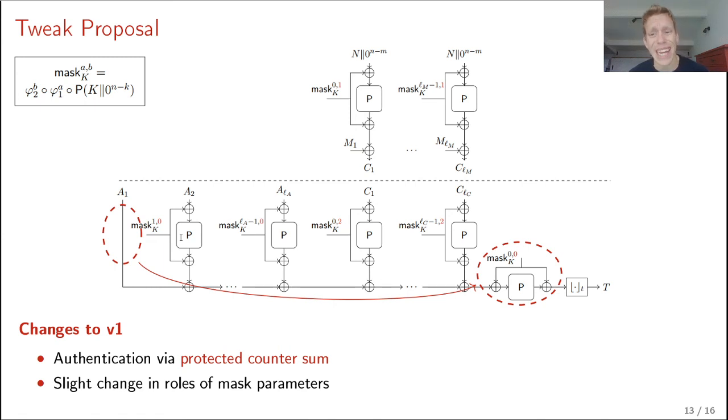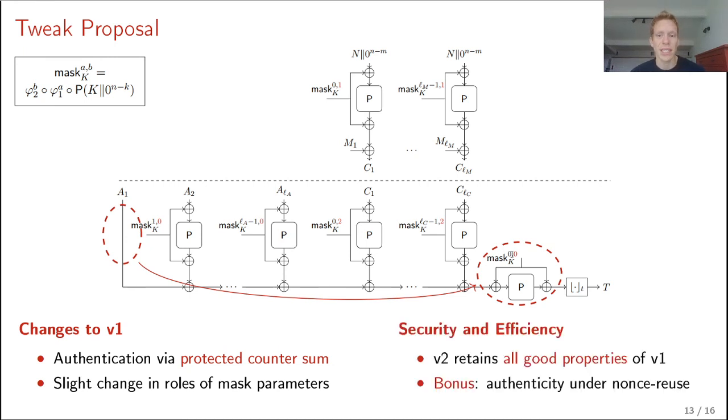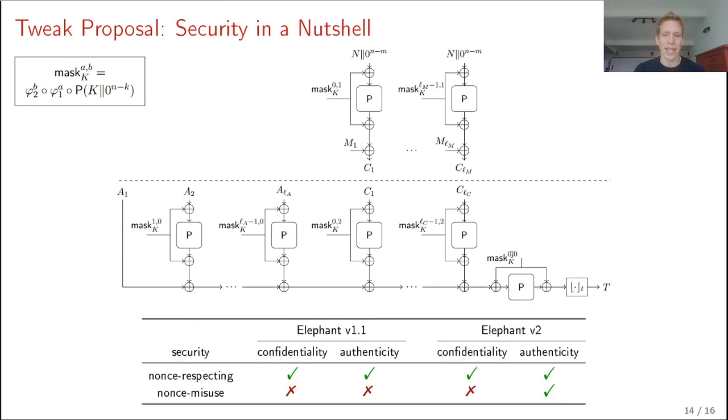So the good thing of this is that version 2 would retain all good properties of version 1. And in addition, we use a Protected-Counter-Sum authenticator, which means that we get authenticity even under nonce reuse. So in a nutshell, on the left side of the table, we see what we proved for the original Elephant. Confidentiality and authenticity in the nonce respecting setting. Elephant version 2 would achieve the same security goals, but in addition, it would achieve authenticity under nonce misuse.